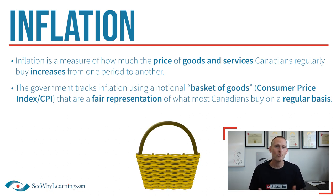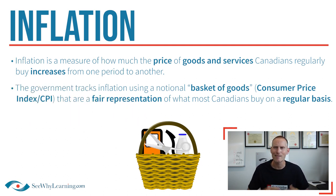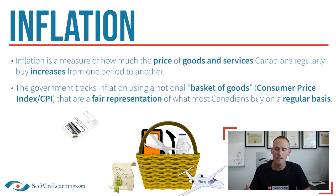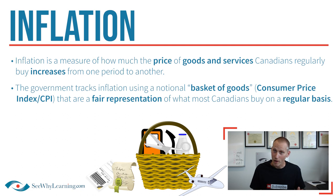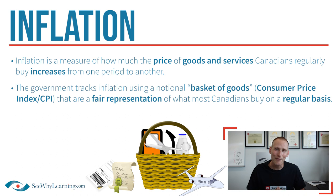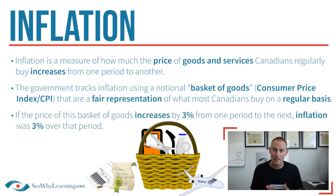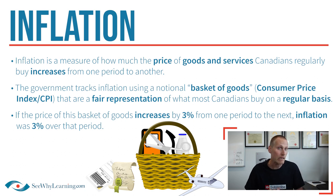The goods in the basket are a fair representation of what most Canadians buy on a regular basis. It includes things like gas, milk, haircuts, appliances, and smartphones — that sort of stuff. It doesn't include things like rare manuscripts, private jets, or NHL season tickets. It's just basic day-to-day stuff. You don't need to know all the products that make up the CPI for your exam. You just have to understand that if the price of this basket of goods increases by say 3% from one period to the next, we would say that inflation has been 3% over that period.